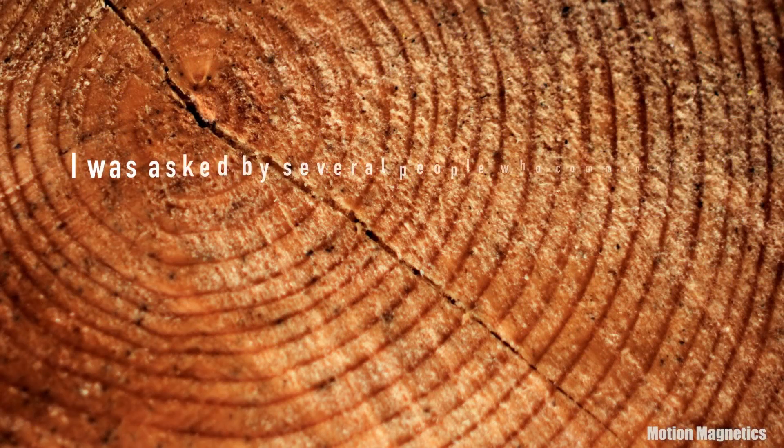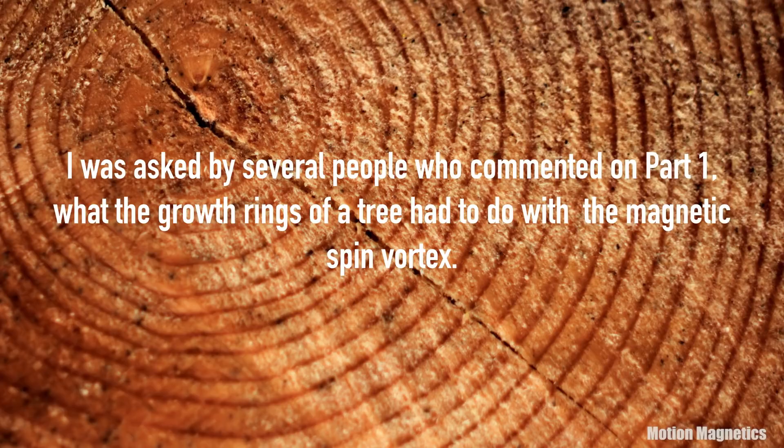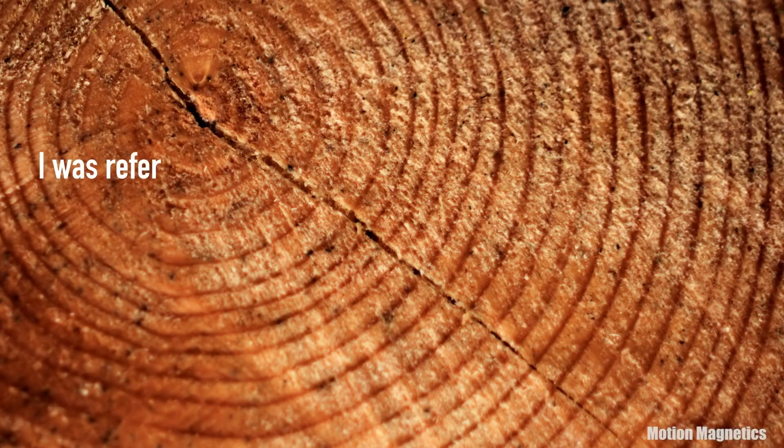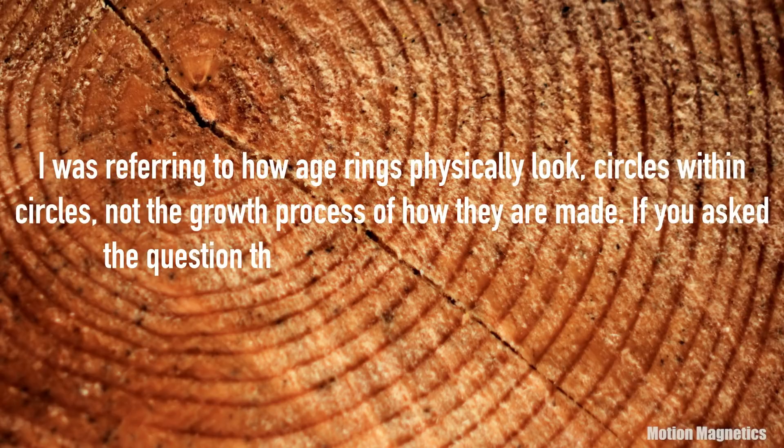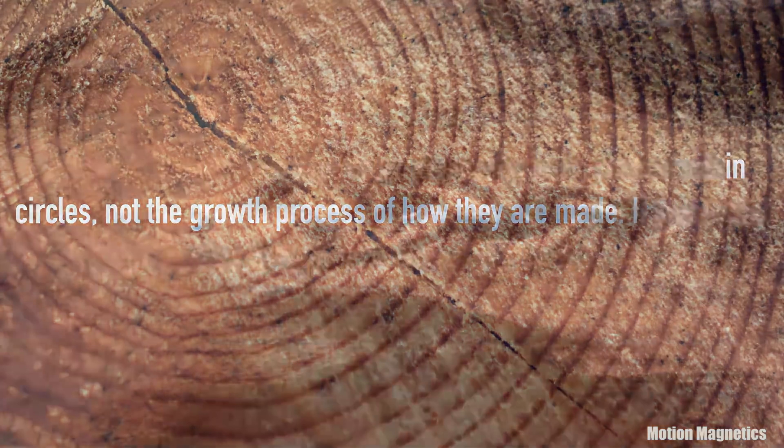I was asked by several people who commented on part 1 what the growth rings of a tree had to do with the Magnetic Spin Vortex. Nothing. I used them as an example of spin in nature because to spin is to rotate in a circular pattern. If you asked the question though, you missed the broader point.